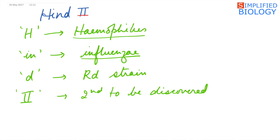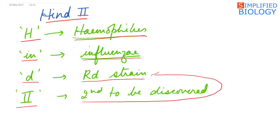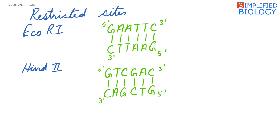Similarly, for HindII: 'H' represents the first letter of the genus Haemophilus. 'in' are the first two letters of the species influenzae. 'D' represents the RD strain of the bacterium, and '2' indicates it was the second to be discovered from that strain. The restriction site of EcoRI is GAATTC, read in the 5' to 3' direction, while for HindII it is GTC and GAC.